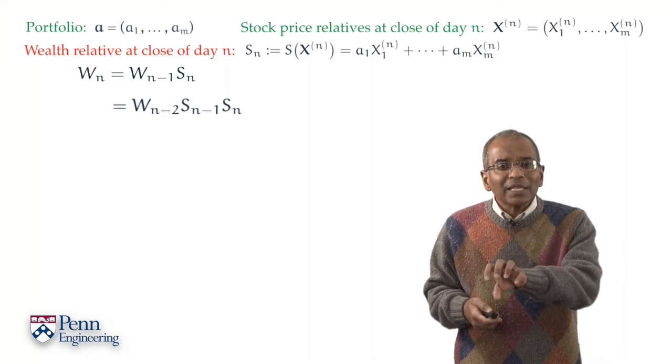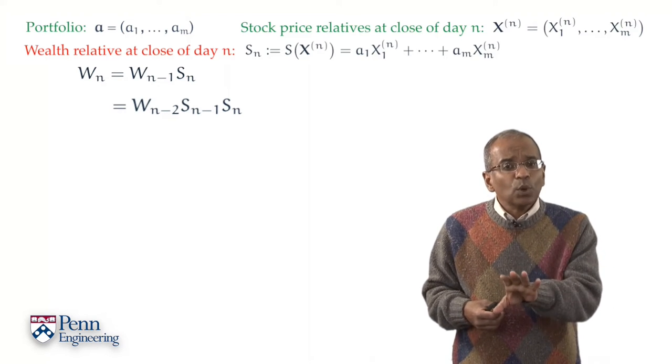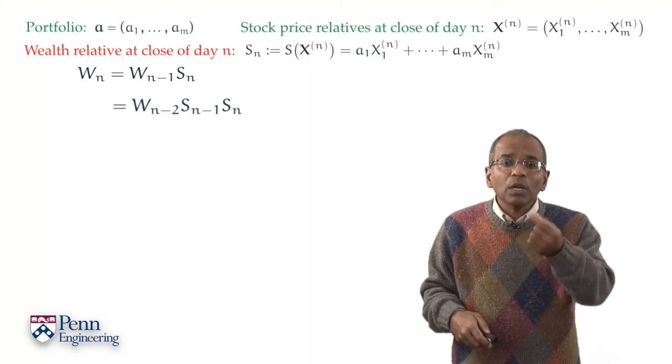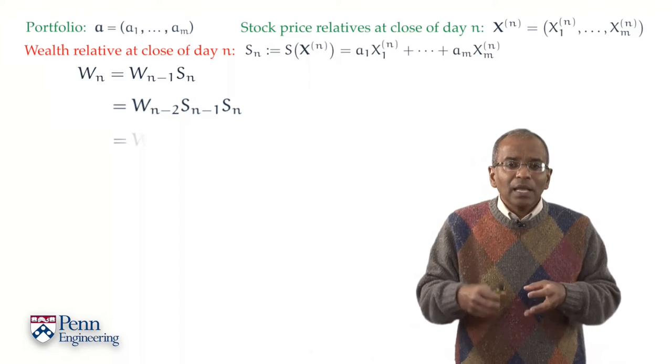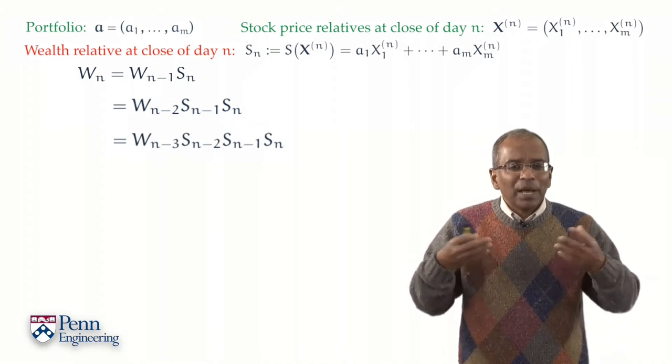But the wealth at the close of trading on day n minus 2 can be related to the wealth at the close of trading on day n minus 3 by looking one more day in the past. And now our equation expands a little further. And now the pattern becomes clear.